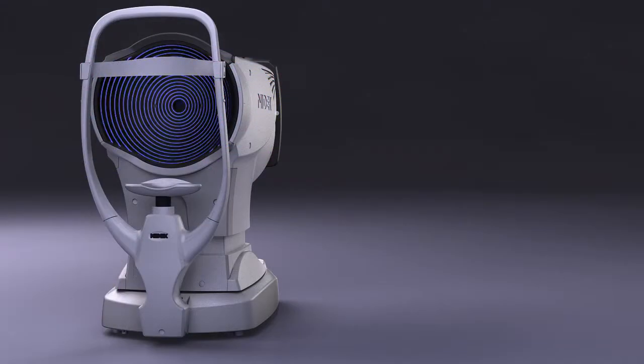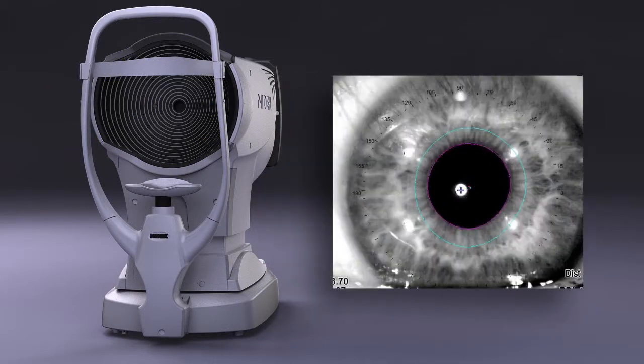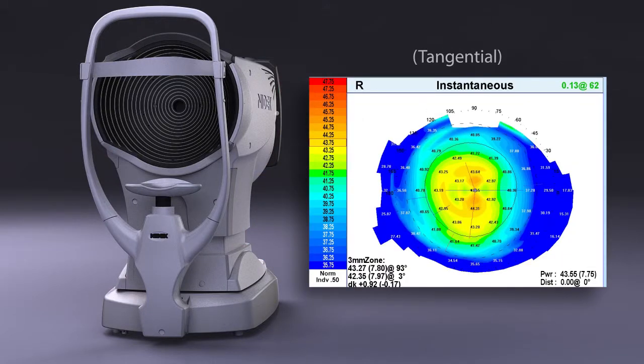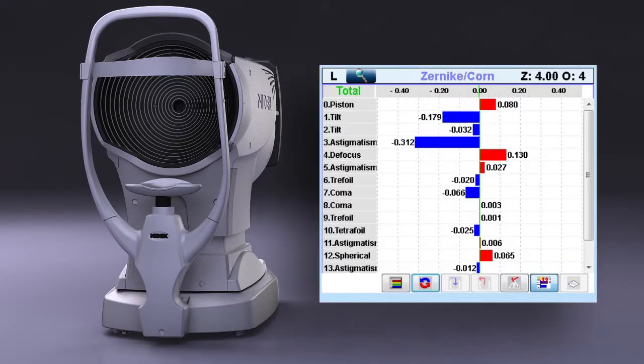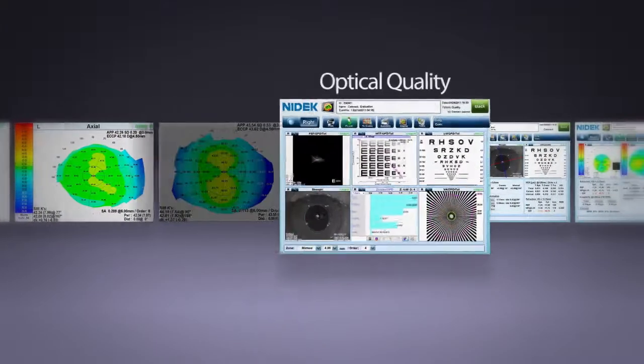The blue light corneal topography provides you with keratometry, photopic pupil, axial, instantaneous, tangential, gradient, Zernike graphs, and elevation maps.